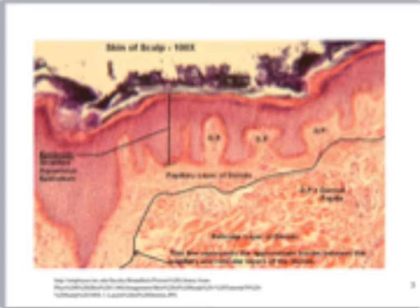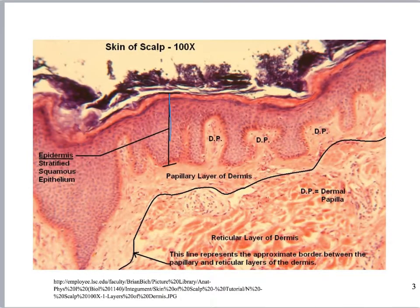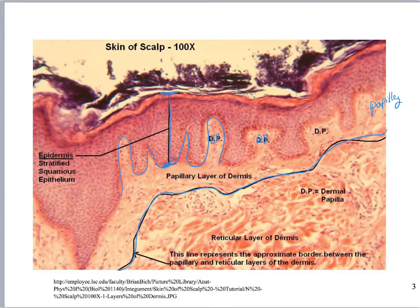Here we're looking at a photomicrograph. You can see right here the stratified squamous epithelium of the epidermis, and you can see really nicely where the basement membrane is. Each one of these areas is a dermal papilla. They drew a nice line right here to distinguish between the papillary region and the reticular region. This is going to be areolar connective tissue proper, and this is going to be dense irregular connective tissue proper.